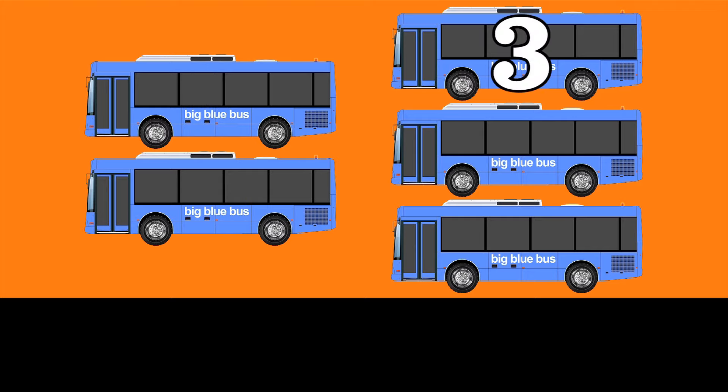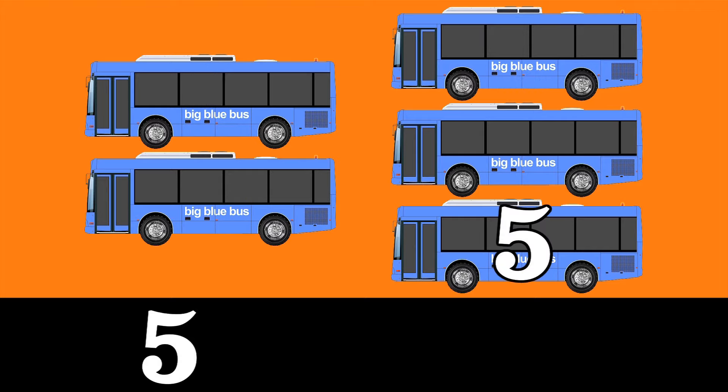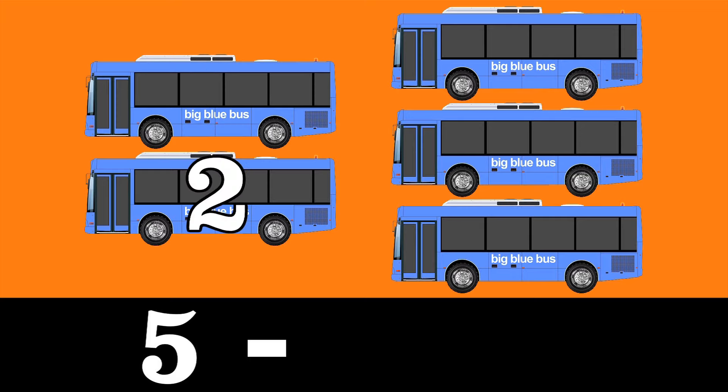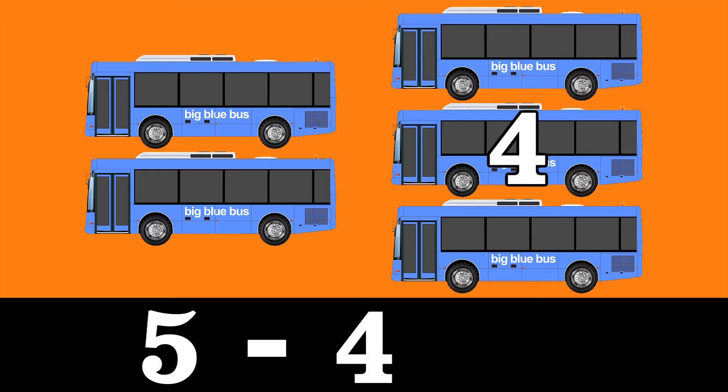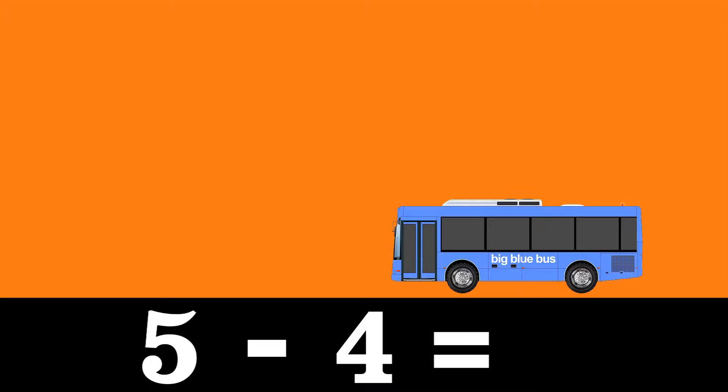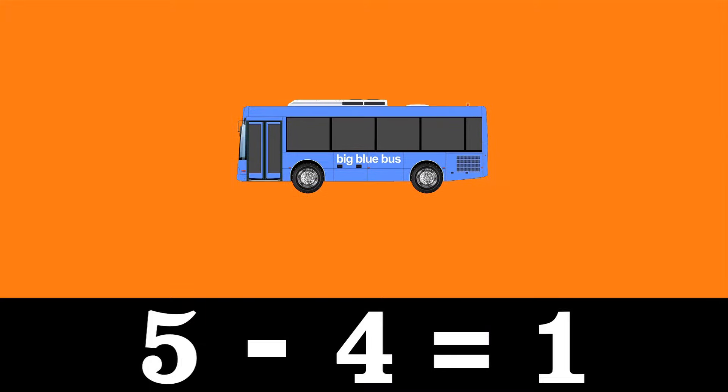One, two, three, four, five city buses minus one, two, three, four city buses equals one city bus. Five minus four equals one.